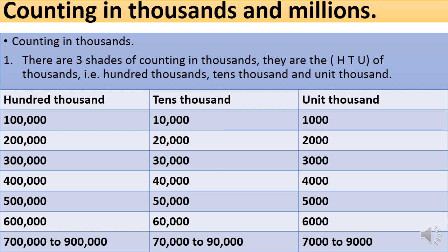There are three shades of counting in thousands: the hundreds of thousands, the tens of thousands, and the unit thousands. In the hundreds of thousands we have: 100,000; 200,000; 300,000; 400,000; 500,000; 600,000; 700,000; up to 900,000. In the tens of thousands we have: 10,000; 20,000; 30,000; 40,000; 50,000; 60,000; 70,000; up to 90,000.